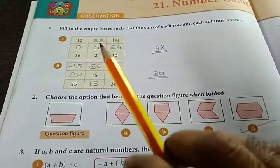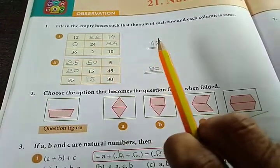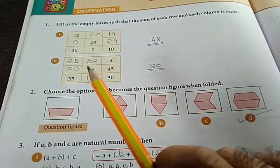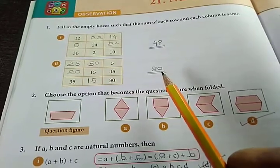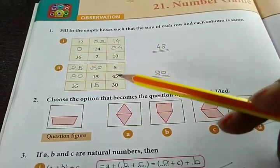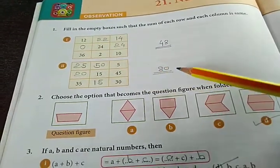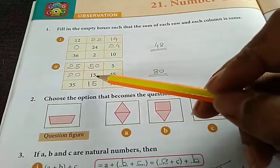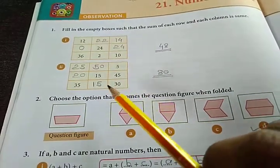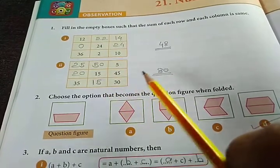Next, just like each column and each row had an addition of 48, here also each column and each row will have an addition of 80. And in the same way we have to write the answers. Here they have already given 5 plus 45 equals 50 plus 30 equals 80.